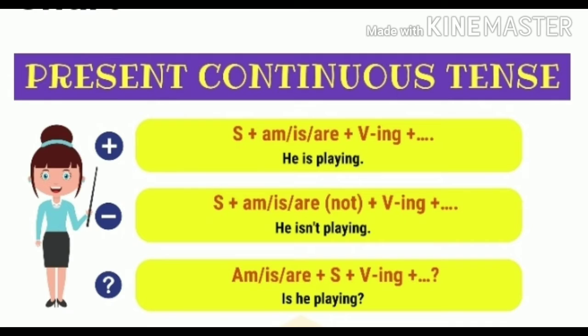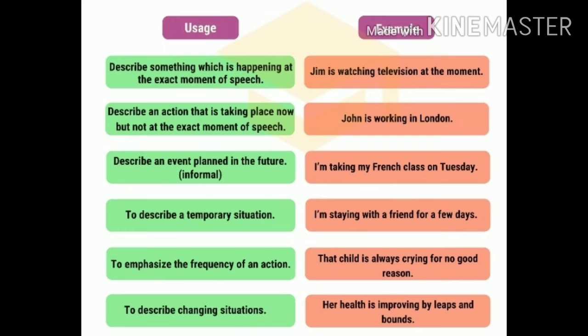For the interrogative form, 'is,' 'am,' or 'are' comes first depending on the subject, followed by the verb with the ing form. For example: 'Is he playing?'